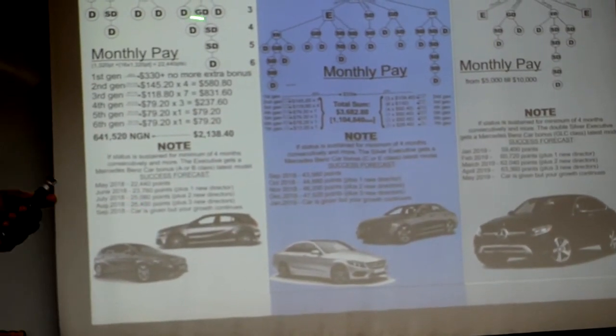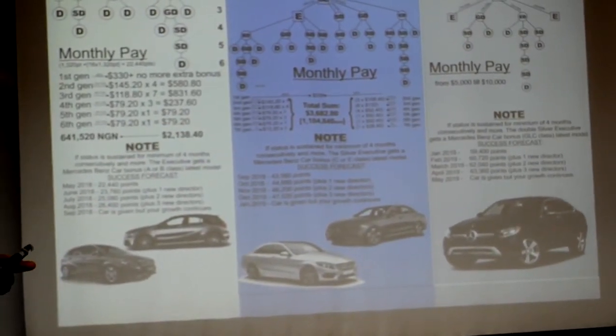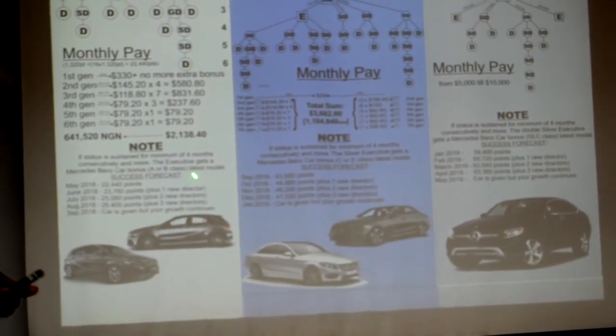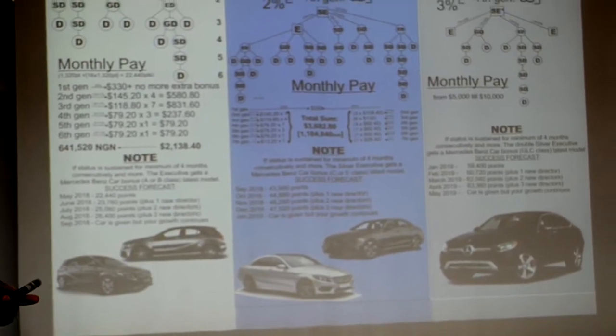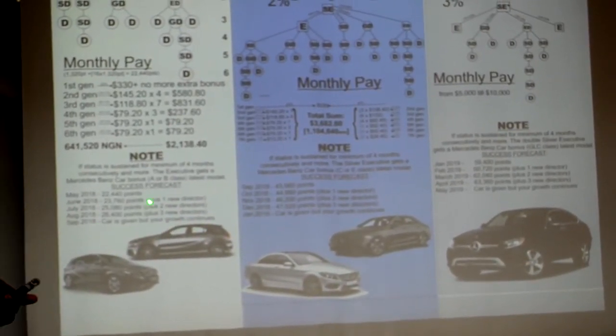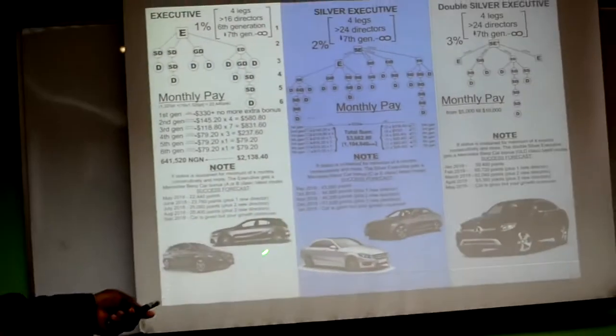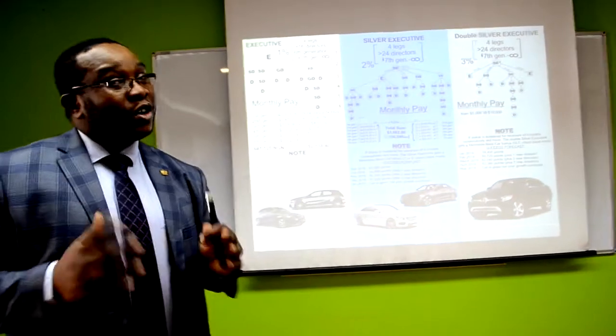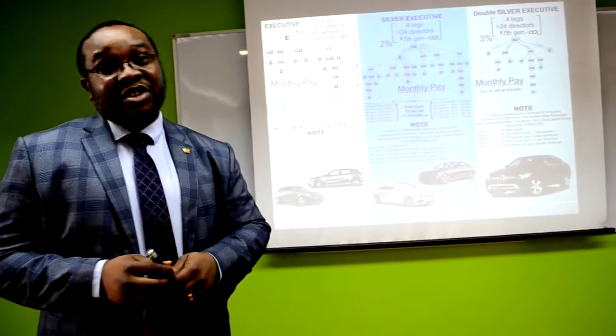Once your levels are sustained, this evaluation of the monthly pay, for you to have an idea, we have a success forecast regarding your monthly activity. Try every time to increase your director status. And also, within the sustenance of this success, you have two options to get a car, Mercedes-Benz A-Class or B-Class. Or you can make another choice if Mercedes-Benz is not your brand.